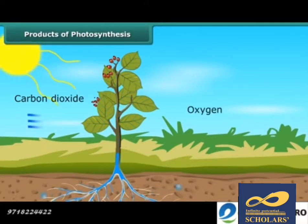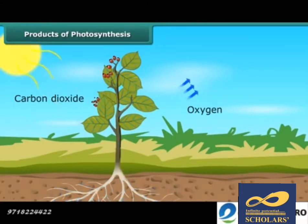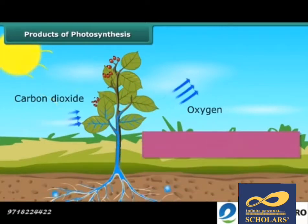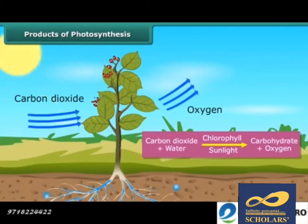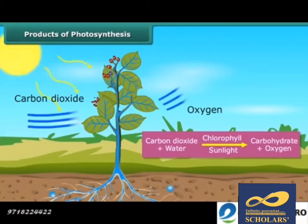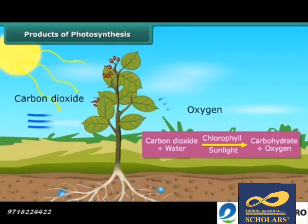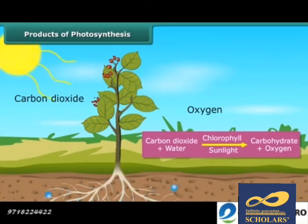In this process, oxygen is also released. Therefore, the process of photosynthesis can be represented as: carbon dioxide plus water, in the presence of chlorophyll and sunlight, gives carbohydrate plus oxygen.